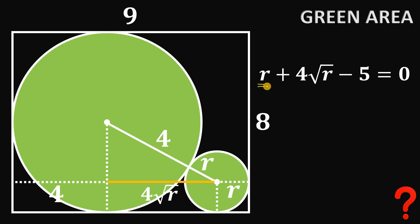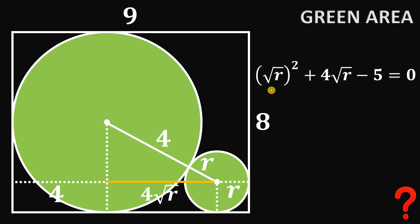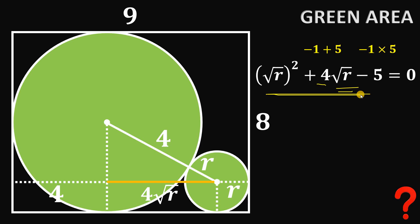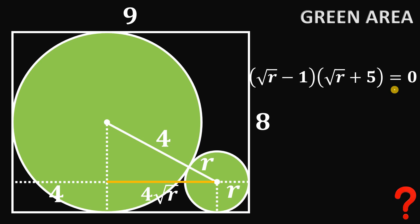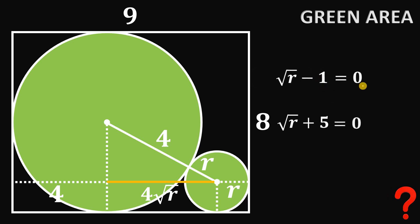Since R is a positive real number, we can rewrite R as (√R)², giving us a quadratic equation in terms of √R. We can factor this as (√R − 1)(√R + 5) = 0. Since the product equals zero, at least one factor must equal zero: either √R − 1 = 0 or √R + 5 = 0.